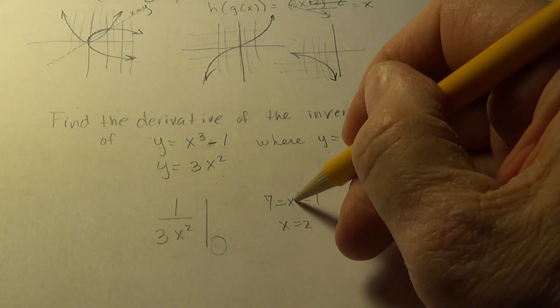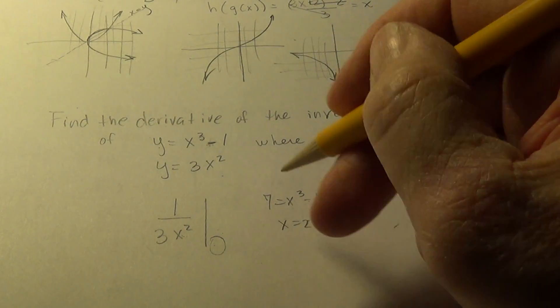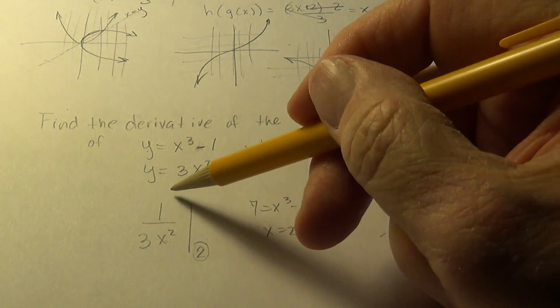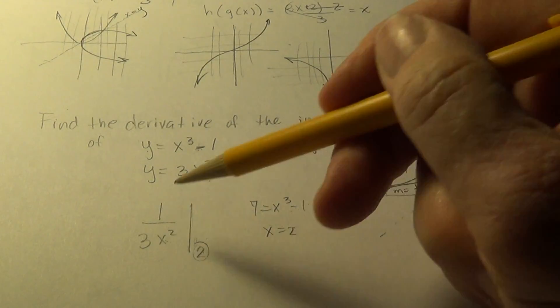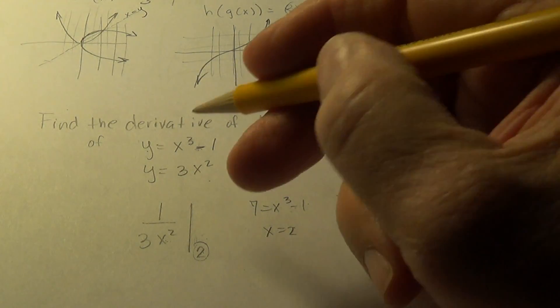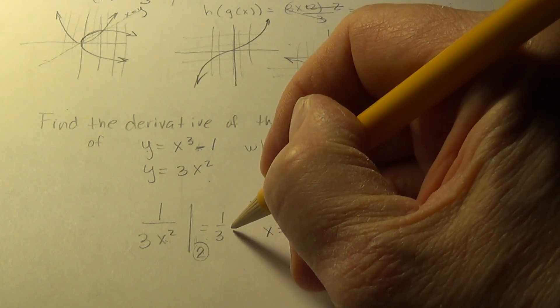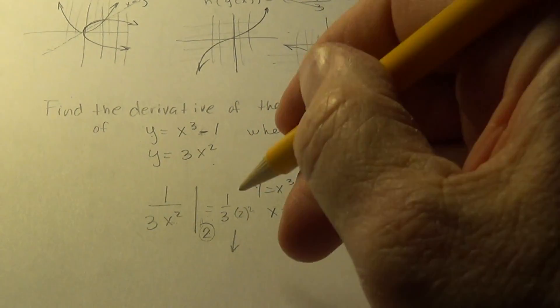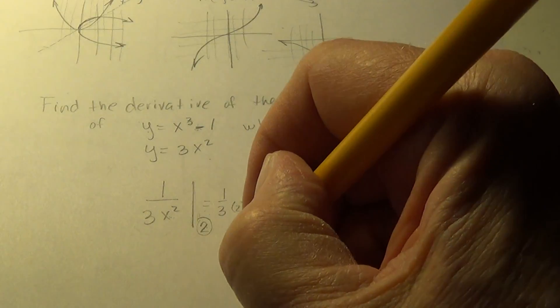I get 2 times 2 times 2 is 8, minus 1 is 7. So, that is the value I need to evaluate this by. So, this line tells me I'm going to put in this number into this expression. So, I'm going to get 1 over 3 times 2 squared. And, that equals 1 over 12.